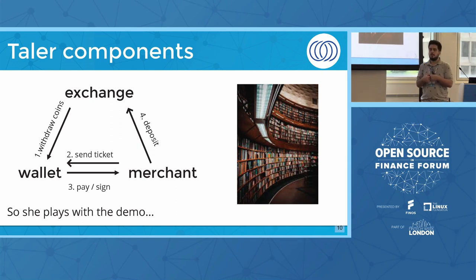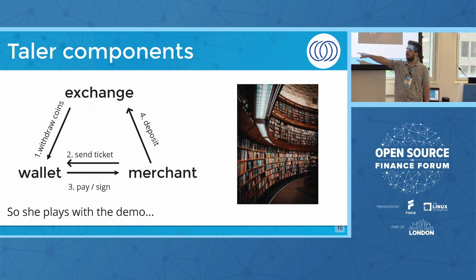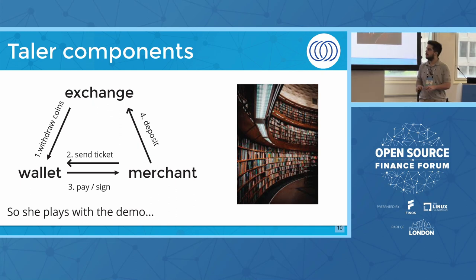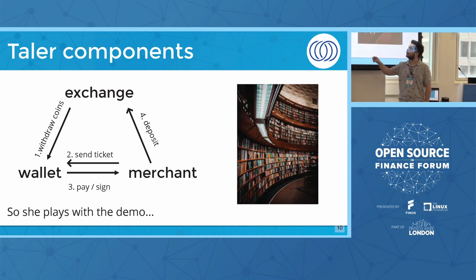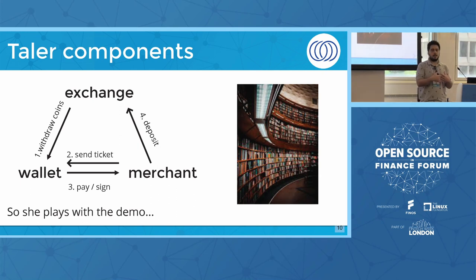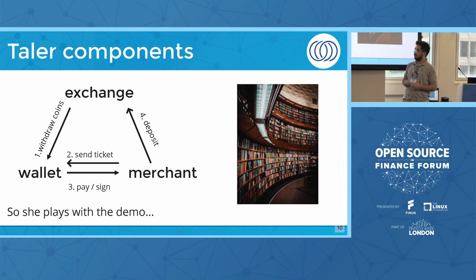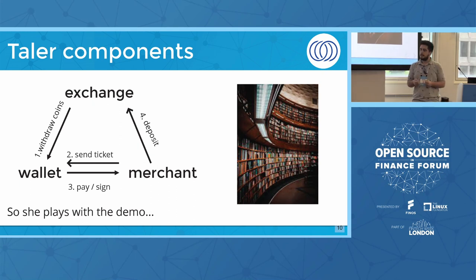A customer who wants to buy something using Thaler needs to install a wallet. There is a web extension to use in the browser and a mobile extension — we are going to see them running. There is also an exchange. You need to think of the exchange as an interface of a banking system. If I want to pay in the street, I go to an ATM, get cash, and use it at a merchant. This is the same, but in the digital world.